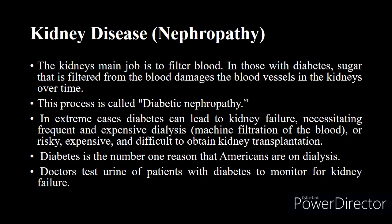The next complication is kidney disease, or nephropathy. The kidney's main job is to filter blood. In people with diabetes, the high amount of blood glucose being filtered damages the blood vessels in the kidneys over time. The glucose that cannot be broken down must ultimately be eliminated from the body through the kidney, placing a major burden on it — this is diabetic nephropathy. In extreme cases, diabetes can lead to kidney failure, necessitating frequent and expensive dialysis or kidney transplantation. Diabetes is the number one reason many people are on dialysis, and doctors test urine to monitor for kidney failure.